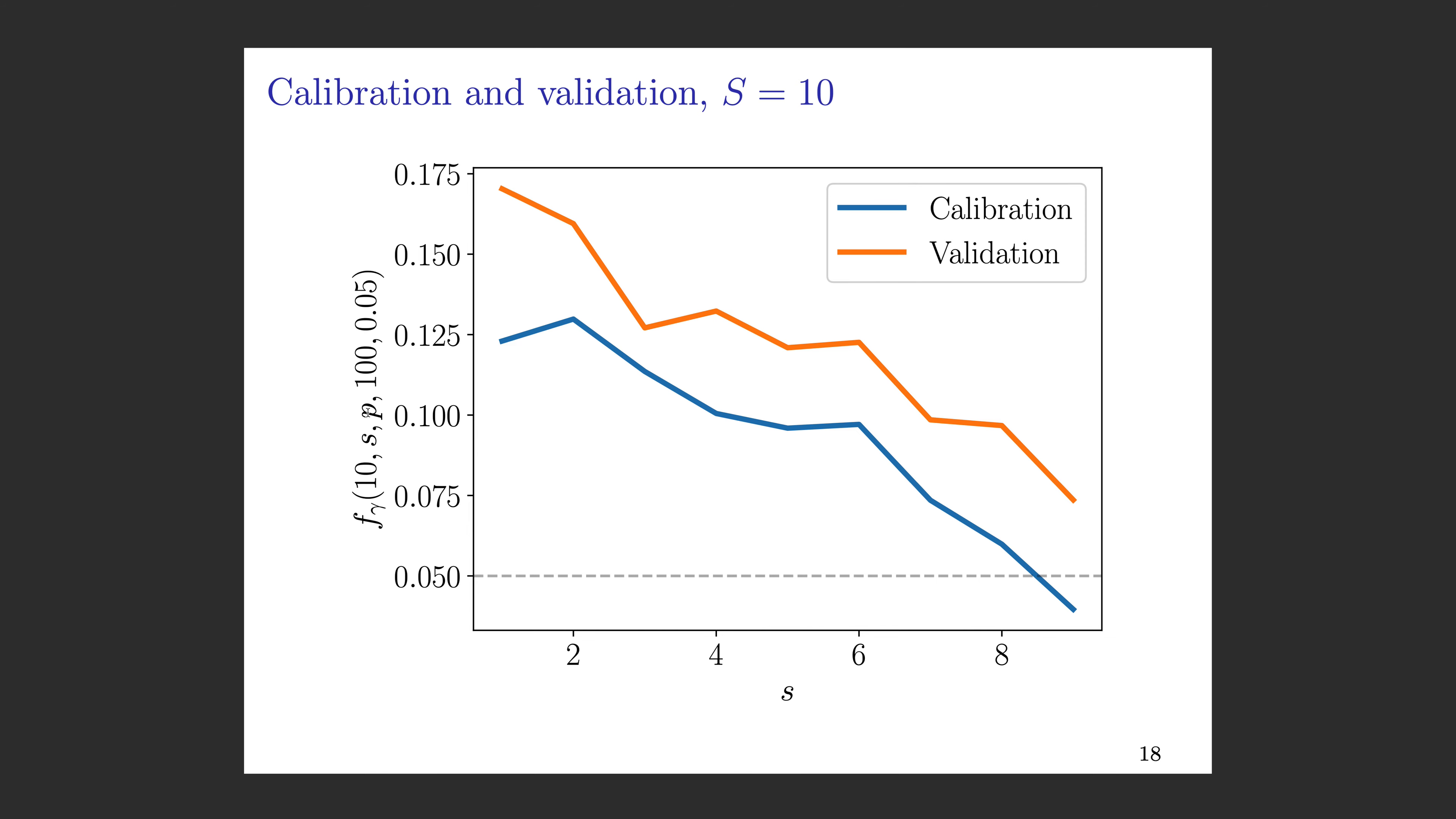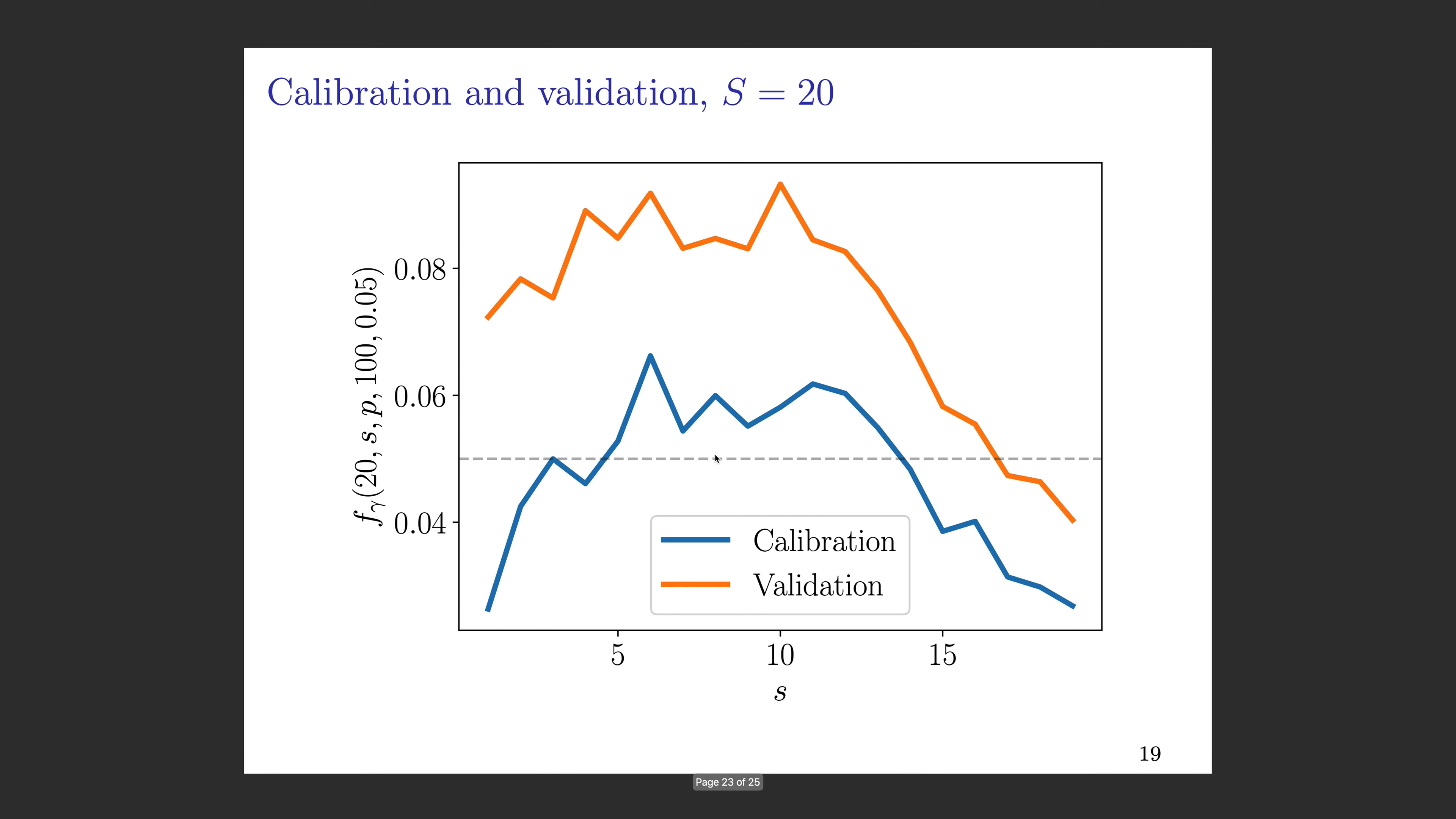You can see here that the number of gamma values above the threshold starts out higher, and as we include more and more species into our reduced model, then the number of small gamma values decreases. Of course, the validation points are lagging a bit behind the calibration points, but also still decreasing.